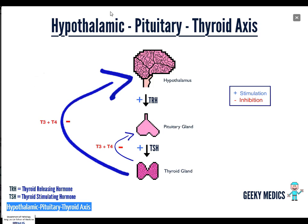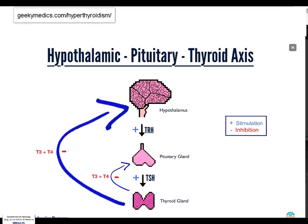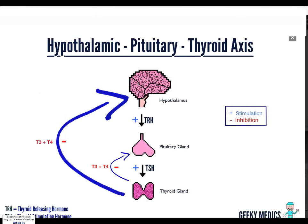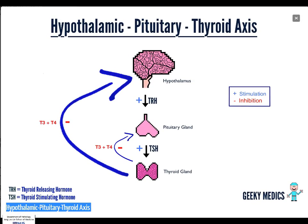So have a look at this diagram here. This is taken from a website called GeekyMedics. So you can just google geekymedics.com slash hyperthyroidism. And this diagram very nicely shows you the axis. So we have the hypothalamus that produces TRH, thyrotropin-releasing hormone. This stimulates the pituitary gland, which in turn produces thyroid-stimulating hormone, TSH. And this then stimulates the thyroid gland to produce T3 and T4.